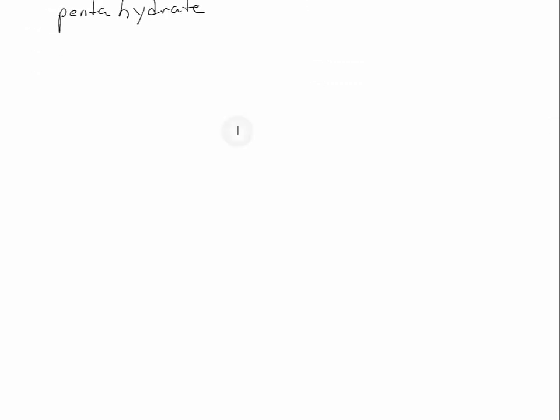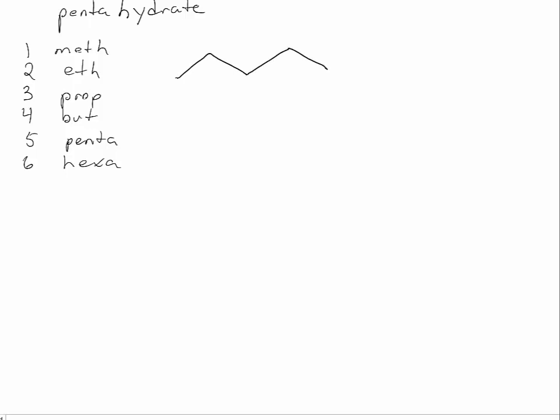Finally, with organic compounds, the prefixes change by a little bit for 1 through 4, but are the same after these. And we're simply going to look at these to be able to identify for organic molecules how many carbons are in the compound.